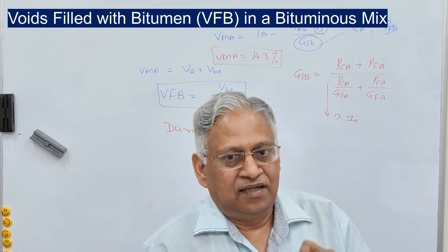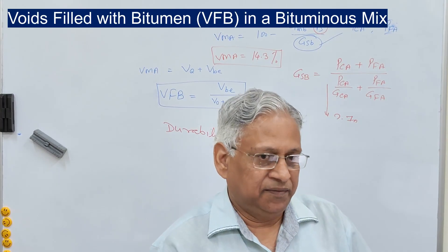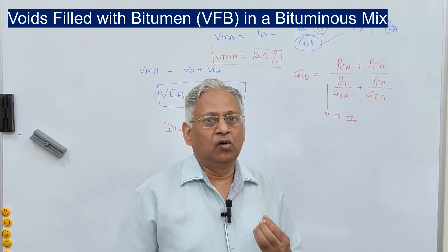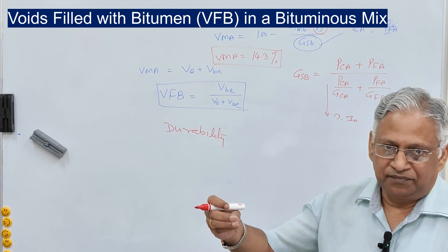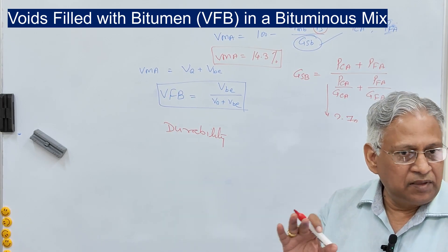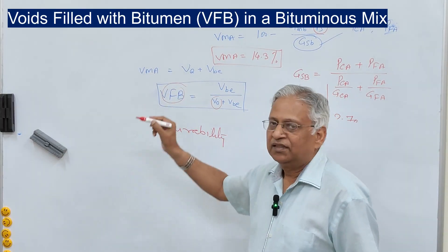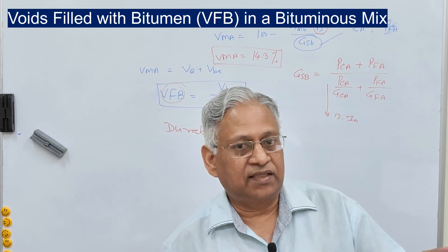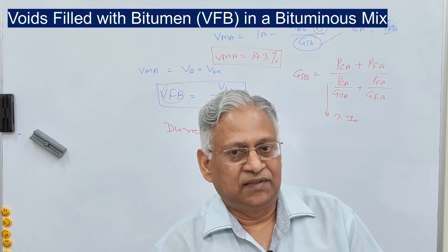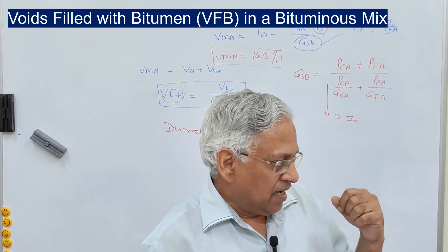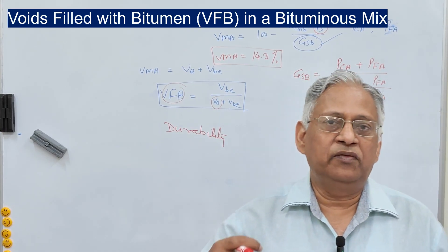Many times a designer feels difficulty in meeting the criteria of 65–75 percent VFB. For example, if you design a mixture for low volume traffic, the tendency would be to keep high air voids, say 5 percent. Now this 5 percent is within the permissible limit of 3–5 percent, but as high air voids means low VFB, the VFB may go out of range on the lower side, resulting in a less durable mix even under low traffic conditions.